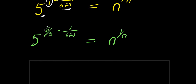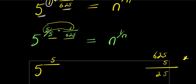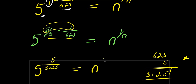Multiplying the numerator: 5 times 1 over 5 times 6/5 gives us 5 over 31/5. So this becomes 5 to the power of 5 over 31/5, equals n to the power 1 over n.